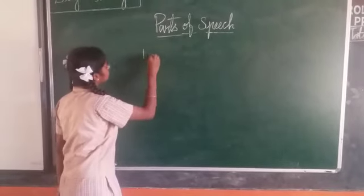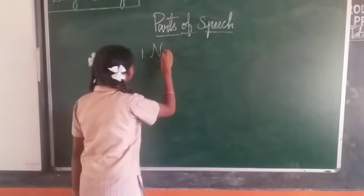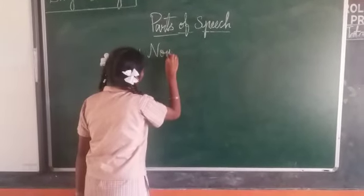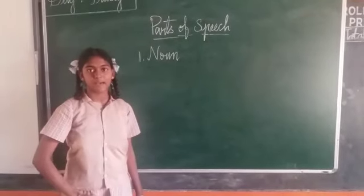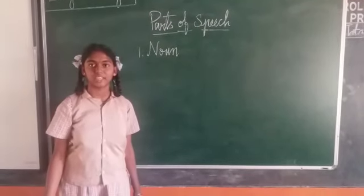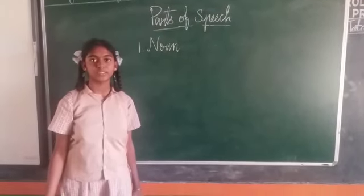The first one is Noun. Noun is a naming word. For example, trees, vegetables, fruits.